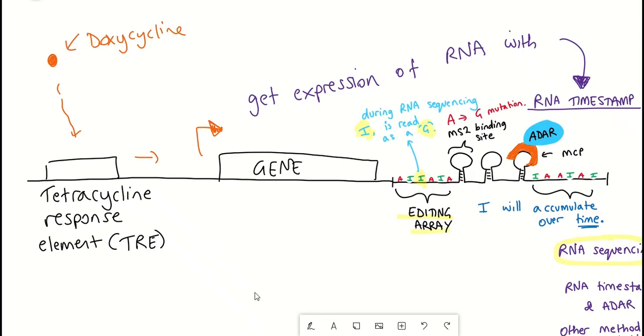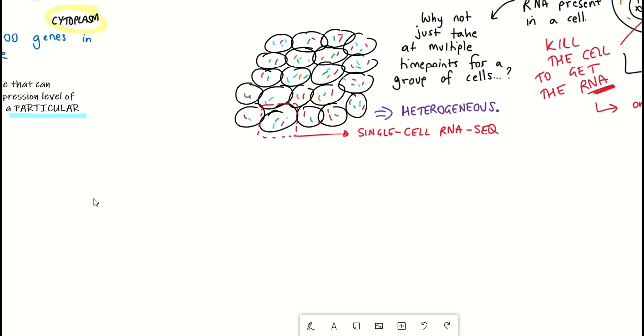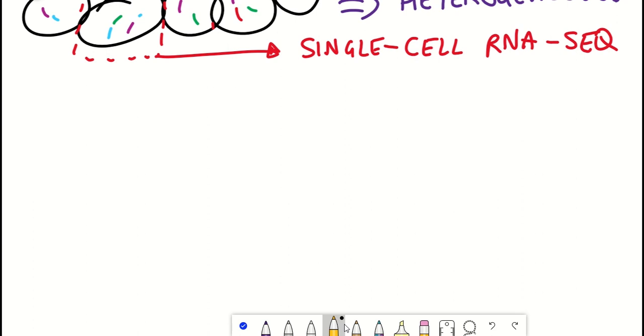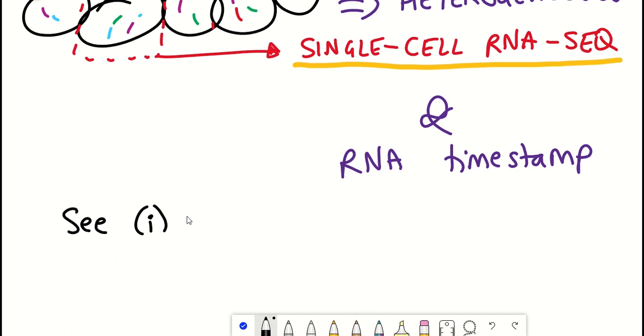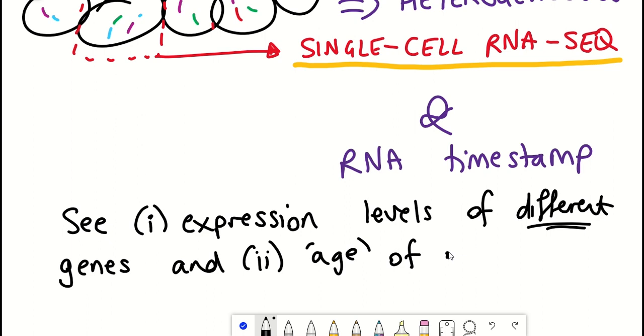Now, in the interest of time, pardon the pun, I'm going to jump forward to some of their last data that shows how this technique can be applied to single cells, whereby not only can they get timestamped information for RNA and the age of the RNA, but also transcriptomic information for the rest of the cell, so the expression levels of different genes within that cell.